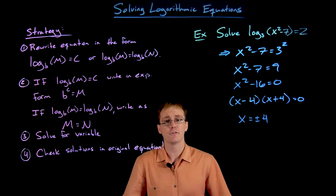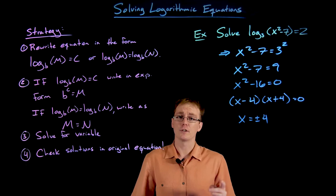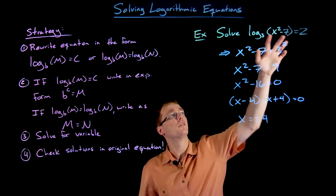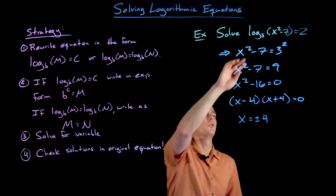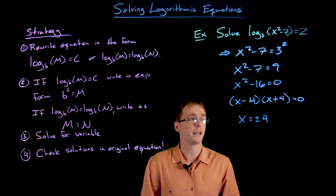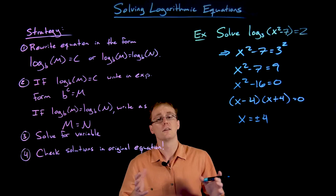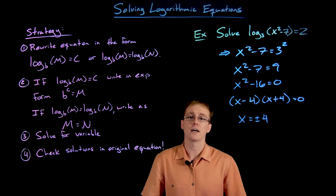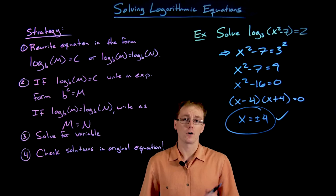We can't forget the final step: we have to check our solutions in the original equation. We do not kick out a value just because it is negative — we plug it in and make sure the quantity inside the logarithm stays positive. If we use x equals four, we get 16 minus seven, which is positive nine, and log base three of nine equals two, so that works. With x equals negative four, negative four squared also gives positive 16, minus seven still gives positive nine — so that works too. Both x equals four and x equals negative four are solutions.